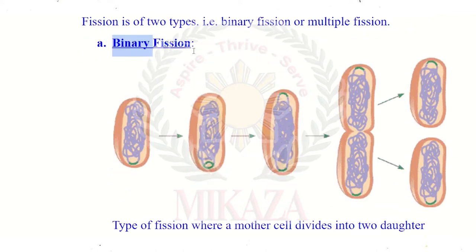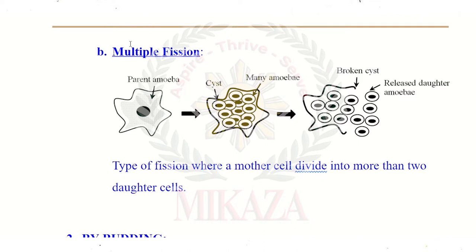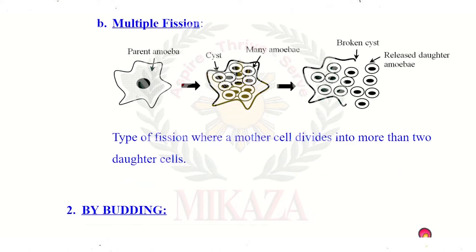The second type of fission is multiple fission. In multiple fission, the mother cell is converted into many daughter cells — more than two daughter cells are produced from a single mother cell.